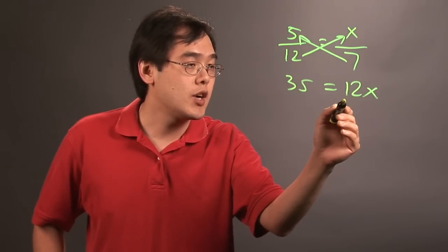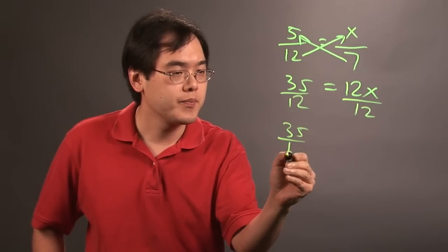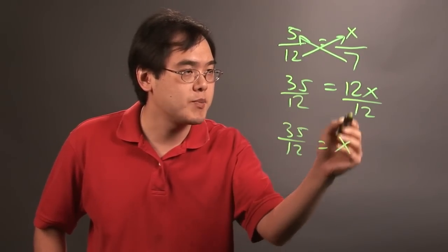To solve for x, you want to divide both sides by 12. So you have 35 twelfths is equal to x because the 12s cancel.